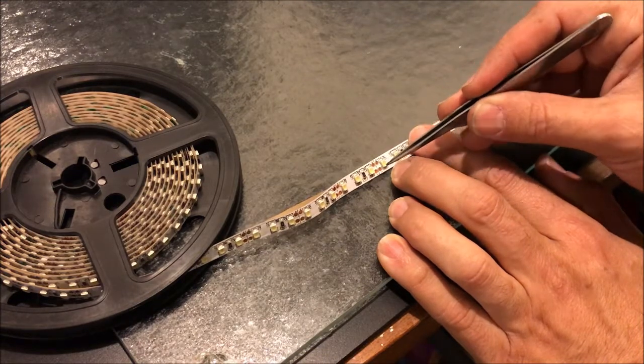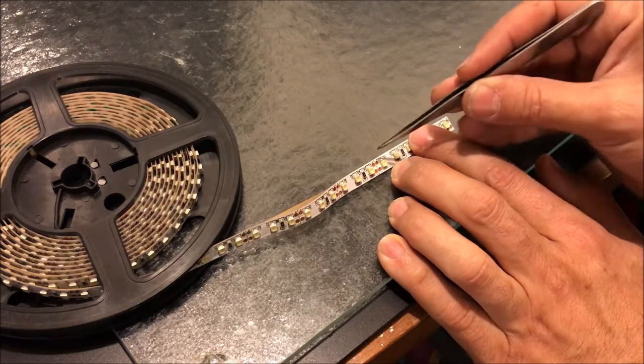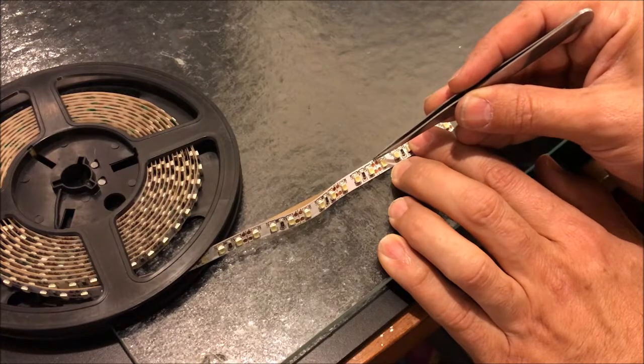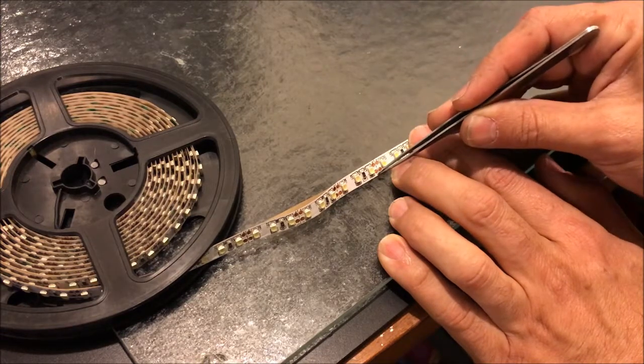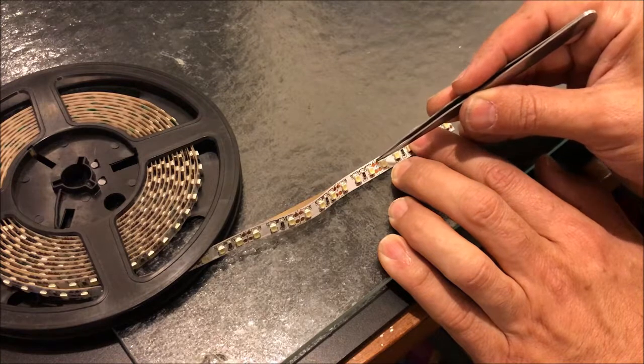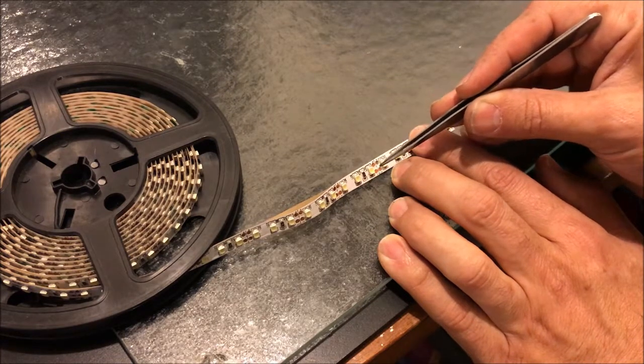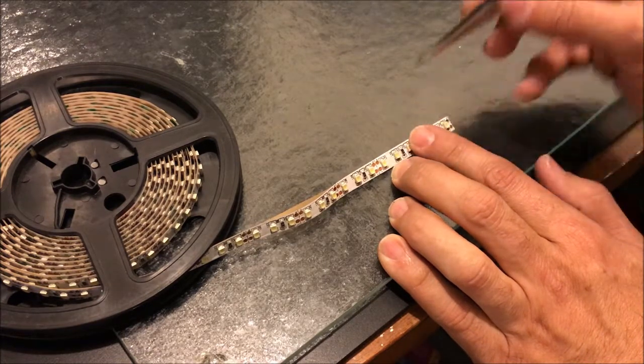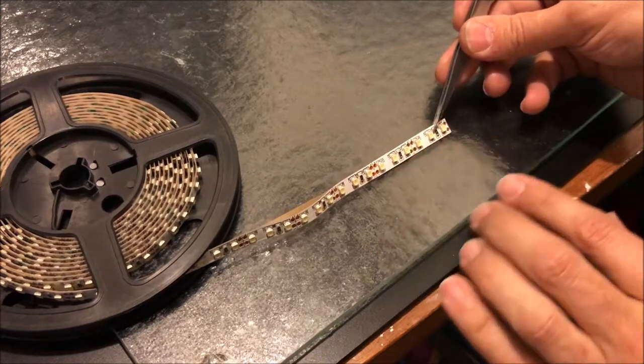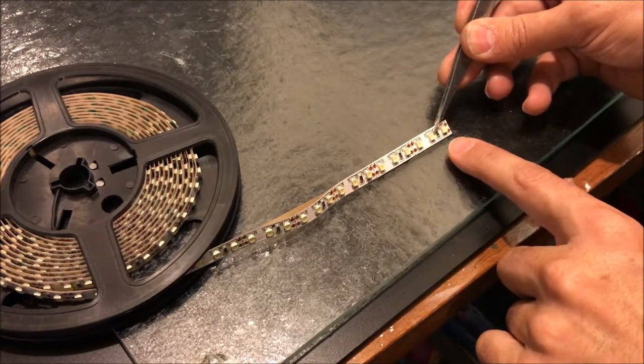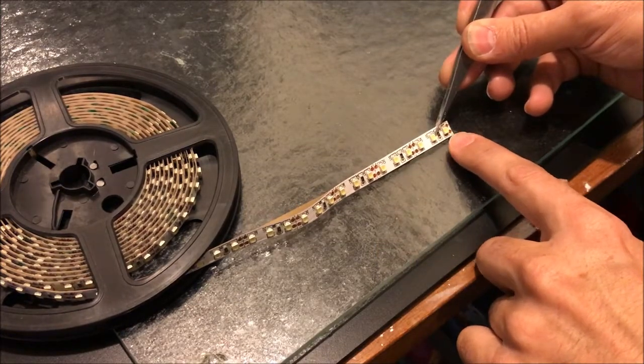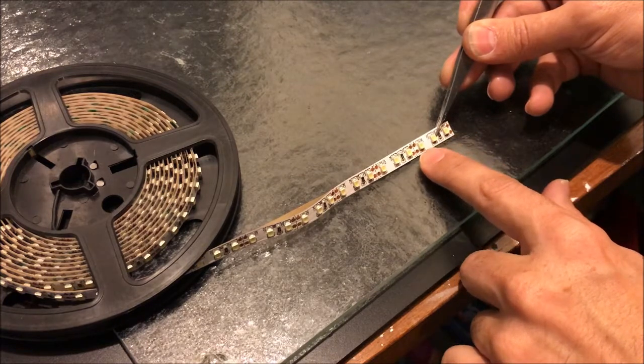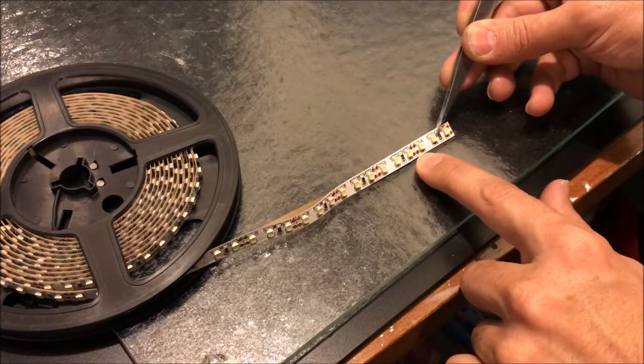You'll also see on the LED tape you have these little copper connectors, little copper disks. I'm not sure if you can see it on the video, but this one does have a little plus sign by it, this one does have a little negative sign by it. So that's where you connect your positive wire and your negative wire.